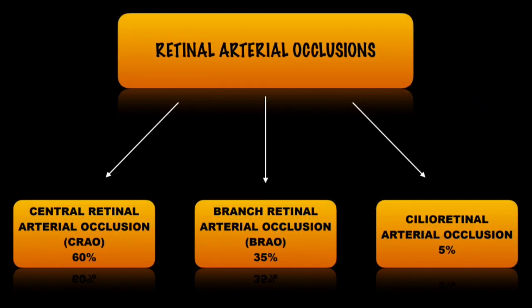Retinal artery occlusions in general can be divided into three types: central retinal artery occlusion or CRAO, which accounts for 60% of arterial occlusions; branch retinal artery occlusion or BRAO, which accounts for 35% of occlusions; and cilio-retinal artery occlusion, which accounts for only 5% of occlusions.